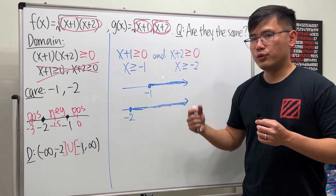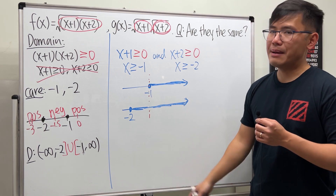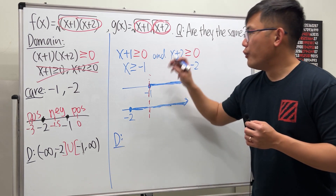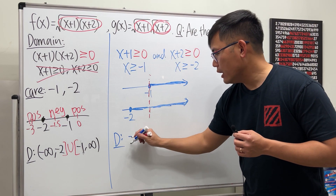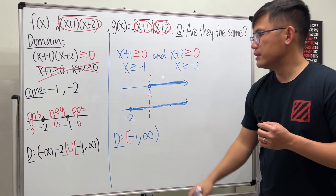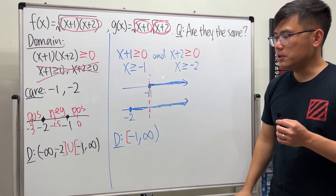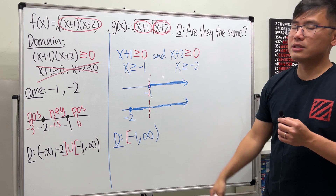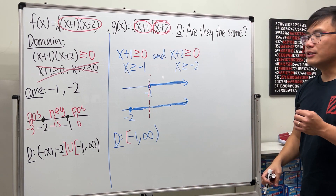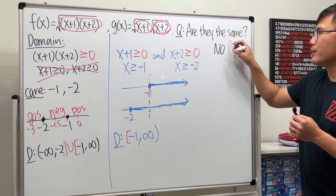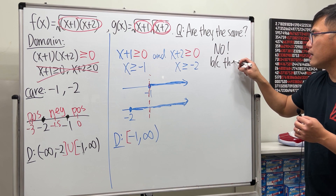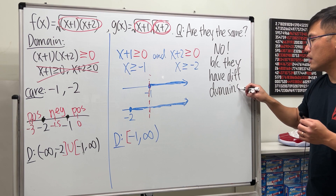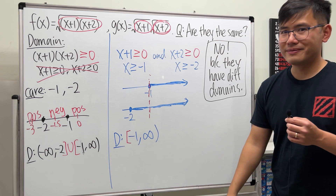We want both conditions to hold simultaneously, so we look at the intersection — the overlapping part — which is x ≥ -1. So the domain of g is [-1, ∞). Comparing: the domain of f is (-∞, -2] ∪ [-1, ∞), while the domain of g is [-1, ∞). f has an extra piece that g does not. Therefore, they are technically not the same function, because they have different domains.